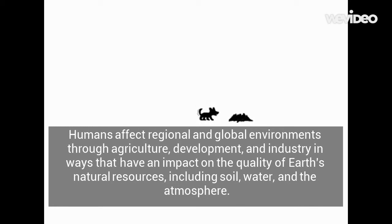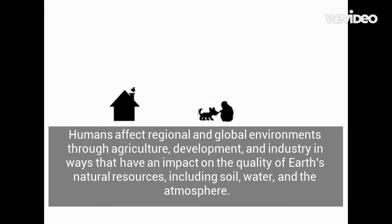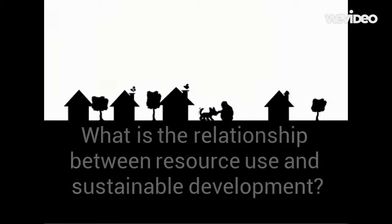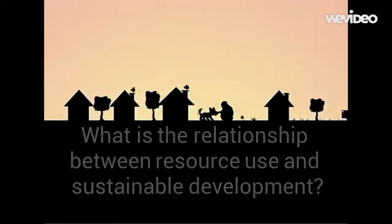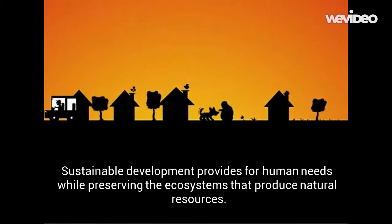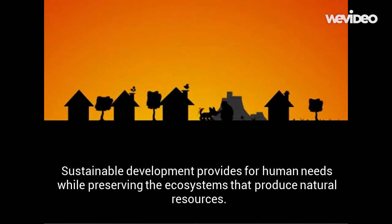Humans affect regional and global environments through agriculture, development, and industry in ways that have an impact on the quality of Earth's natural resources, including soil, water, and the atmosphere. Sustainable development provides for human needs while preserving the ecosystems that produce natural resources.